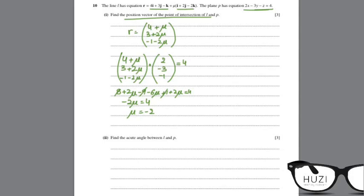You plug this mu back into the R of the line, and you get your point of intersection as 4 minus 2 is 2, 3 plus 2 times minus 2 is minus 1, and finally, minus 1 minus 2 into minus 2 is 4, so minus 1 plus 4 is 3. So your point of intersection is 2, minus 1, and 3.